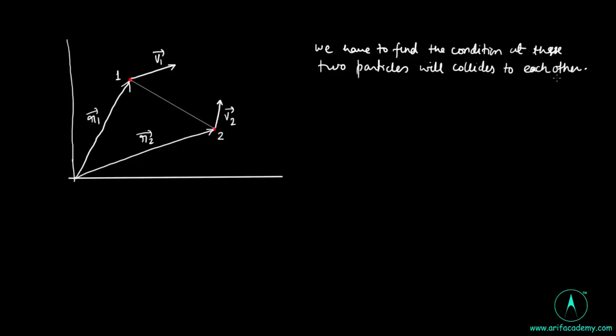The vector from position 1 to position 2 is r2 vector minus r1 vector. If we keep particle 2 at rest, then for collision particle 1 must move along this vector, vector r2 minus vector r1 to collide.